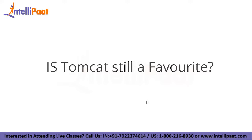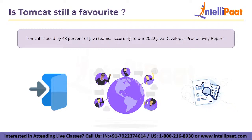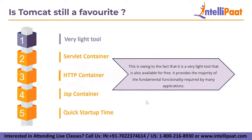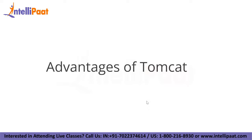Is Tomcat still a favorite? Tomcat is used by 48% of Java teams according to the 2022 Java Developers Productivity Report. This is owing to the fact that it is a very lightweight tool and is available for free. It provides the majority of fundamental functionality required by many applications, has a quick startup time, and a far shorter redeploy time than other tools on the market. Tomcat has excellent documentation, and anything not covered in the official documentation can be found online with several tutorials available. The proper server is always determined by application requirements.